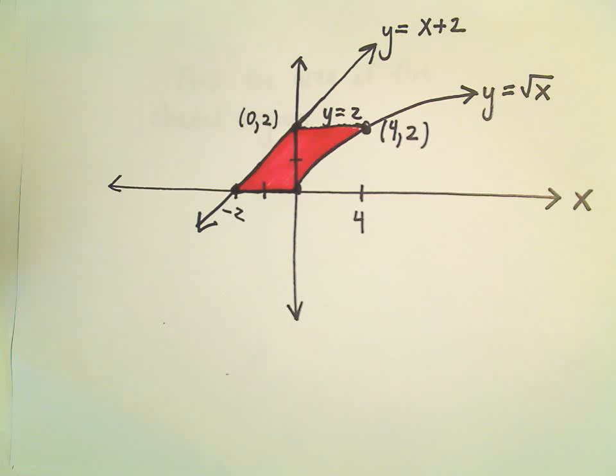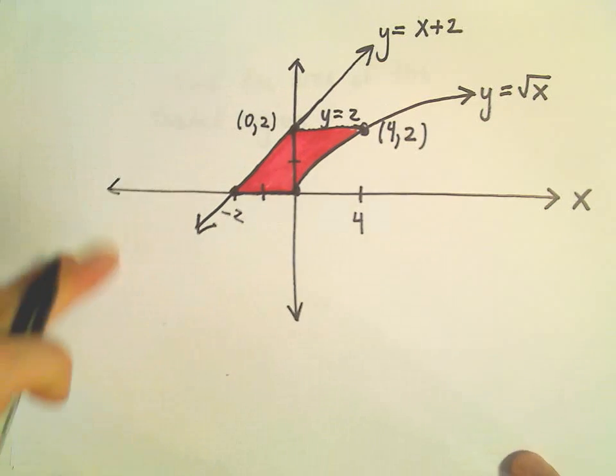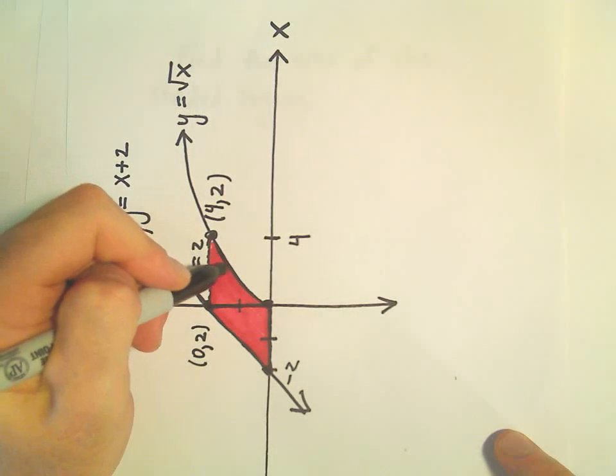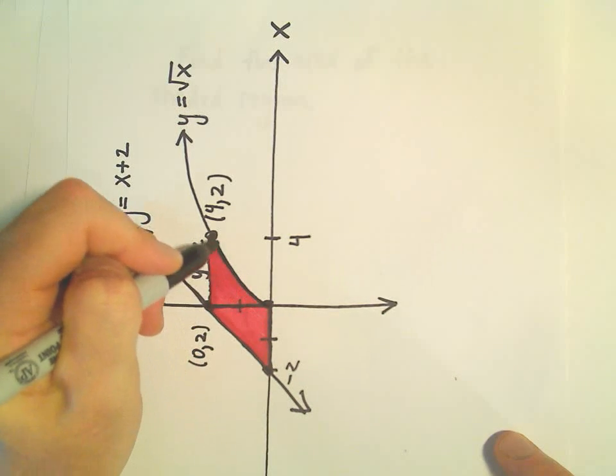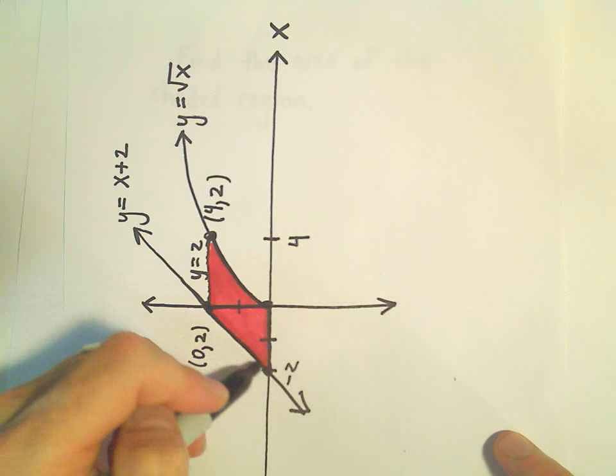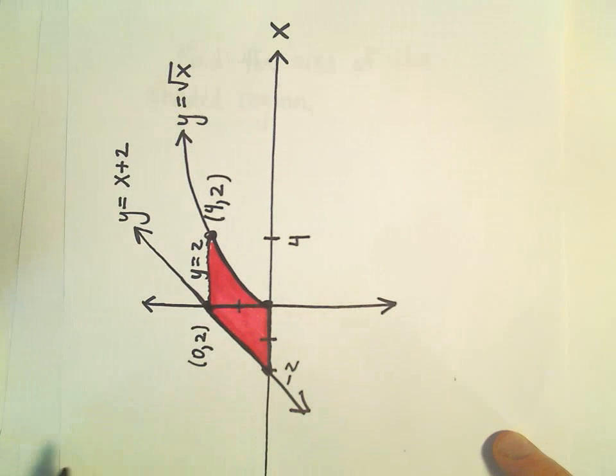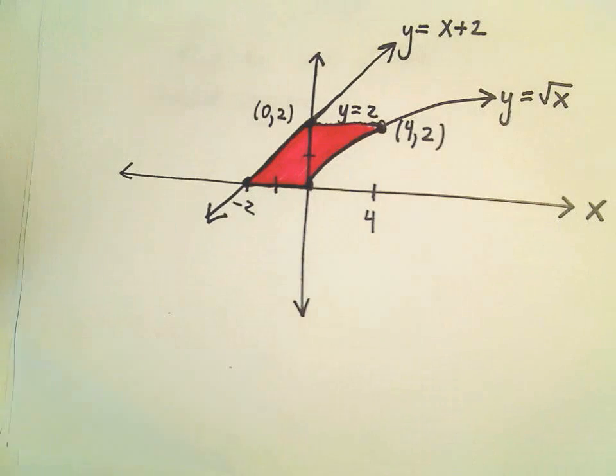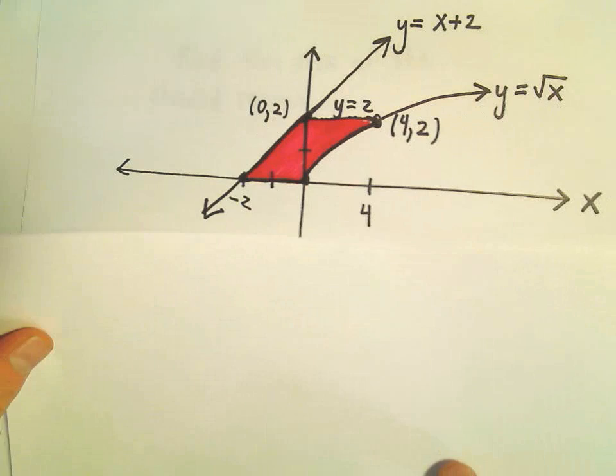If we look at it though, with respect to y, if I were to integrate this with respect to y, to me it's now always the same curve on the top, always the same curve on the bottom. And that to me suggests we could actually set it up with respect to y and make it a single integral, which might make it hopefully a little bit easier to compute.